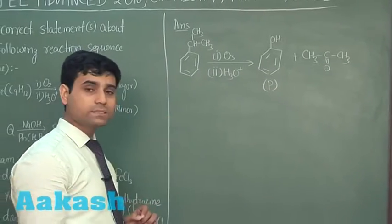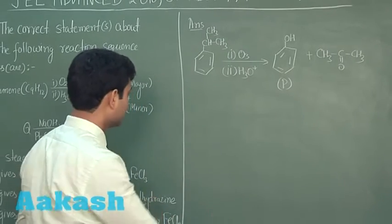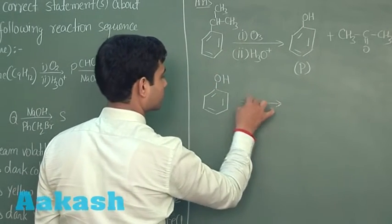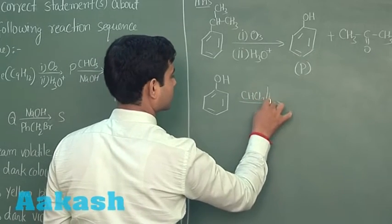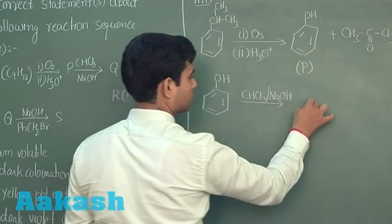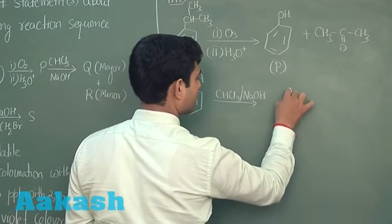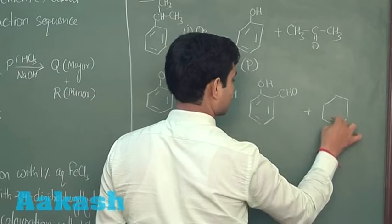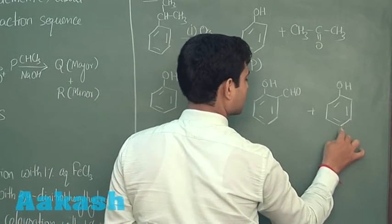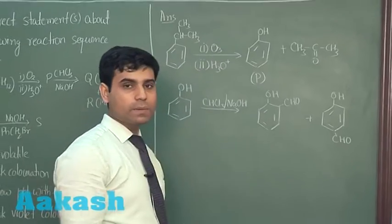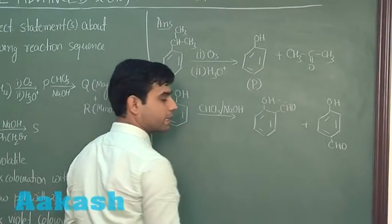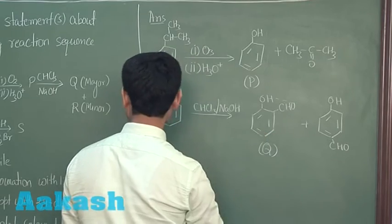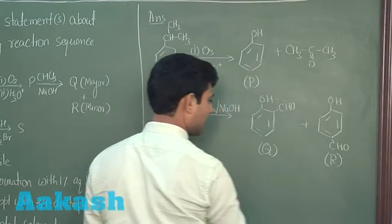When phenol is treated with chloroform and sodium hydroxide, CHO group will attach on either the ortho position or at para position. The ortho will be major product because of intramolecular hydrogen bonding. This is the major product, hence this will be Q. This is our major product and this will be R which is our minor product.